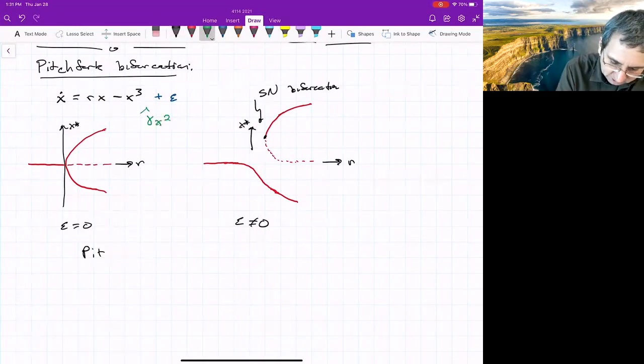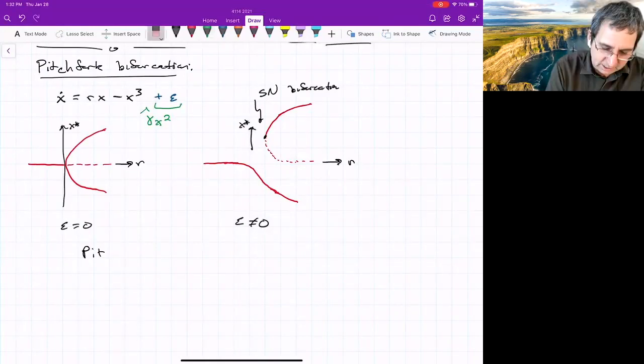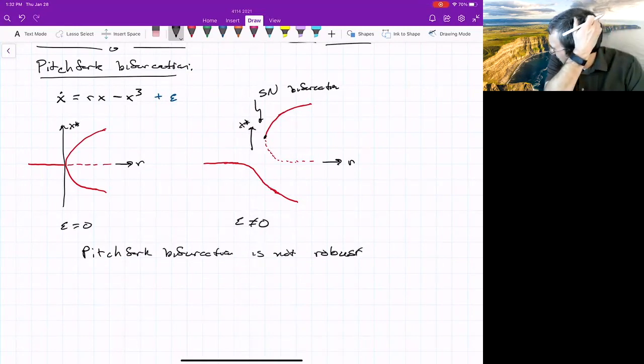Why didn't I add delta x squared? I don't have to. It's already not robust when I add the lowest order term. It's not going to get any better. I don't know. Maybe other things could happen if I added a quadratic term, but pitchfork bifurcation is not robust.